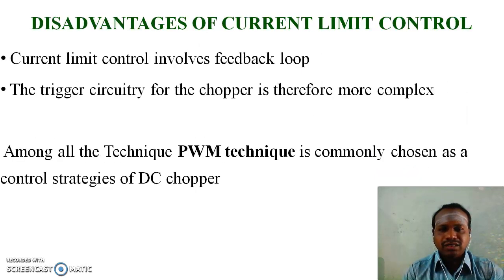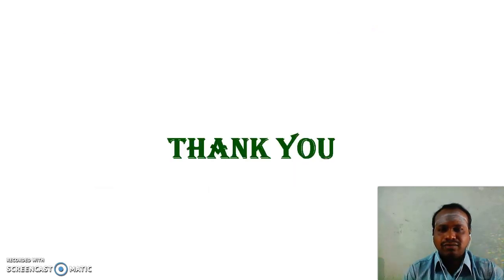Disadvantages of current limit control: Current limit control involves a feedback loop, so the trigger circuit for the chopper is more complex. Among all the techniques, the PWM technique is commonly chosen as a control strategy for choppers. Thank you.